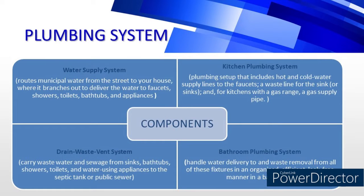Next is the kitchen plumbing system. It is the plumbing setup that includes hot and cold water supply lines to the faucets, and a waste line for the sink. Also included is the drain waste and vent system — the system that carries wastewater and sewage from sinks, bathtubs, showers, toilets, and water-using appliances to the septic tank or public sewer.